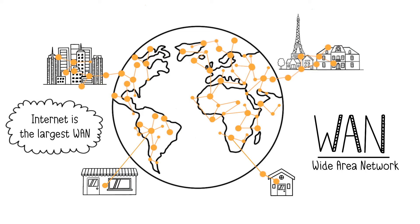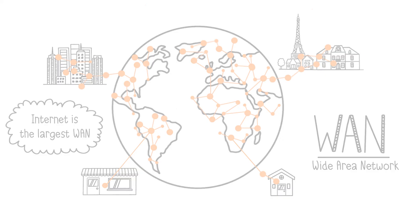International organizations can also establish private WANs, as seen in banking networks or stockbroker systems. WANs rely on infrastructure like fiber optics, international undersea cables, or satellite transmissions.